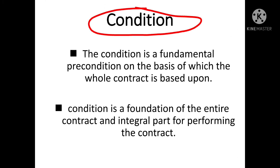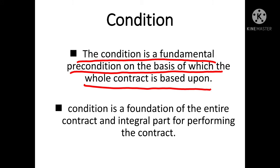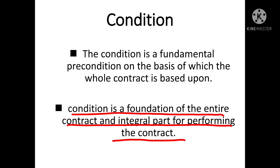सबसे पहले आता है condition। हर contract में कुछ stipulations होते हैं - ऐसी शर्तें जो बहुत ज्यादा important होती हैं उन्हें हम कहते हैं condition। Condition is a fundamental pre-condition on the basis of which the whole contract is based upon। कुछ ऐसी शर्तें जिनके basis पर पूरा contract based है, अगर ये शर्तें fulfill नहीं होंगी तो contract void माना जाएगा।